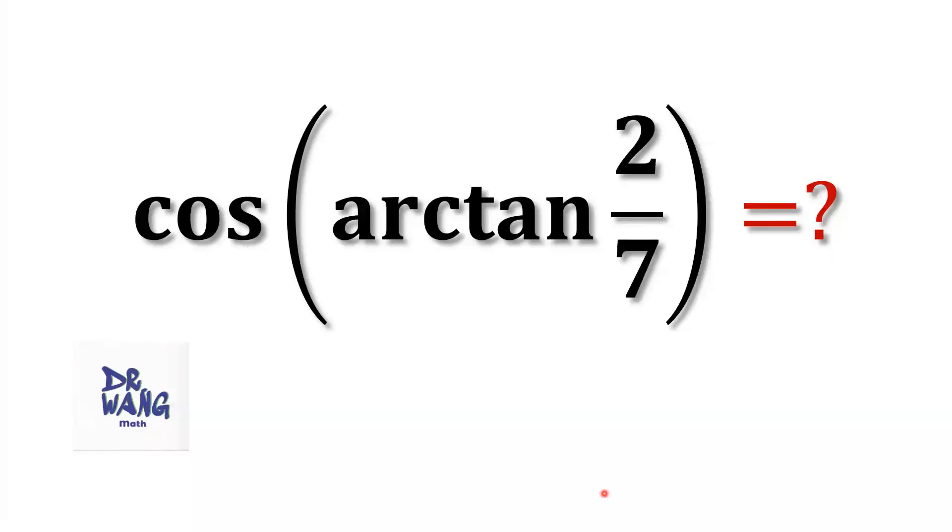Hello, everyone. I'm Dr. Wen. Here is the question: cosine of arc tangent of 2 over 7 equals what?